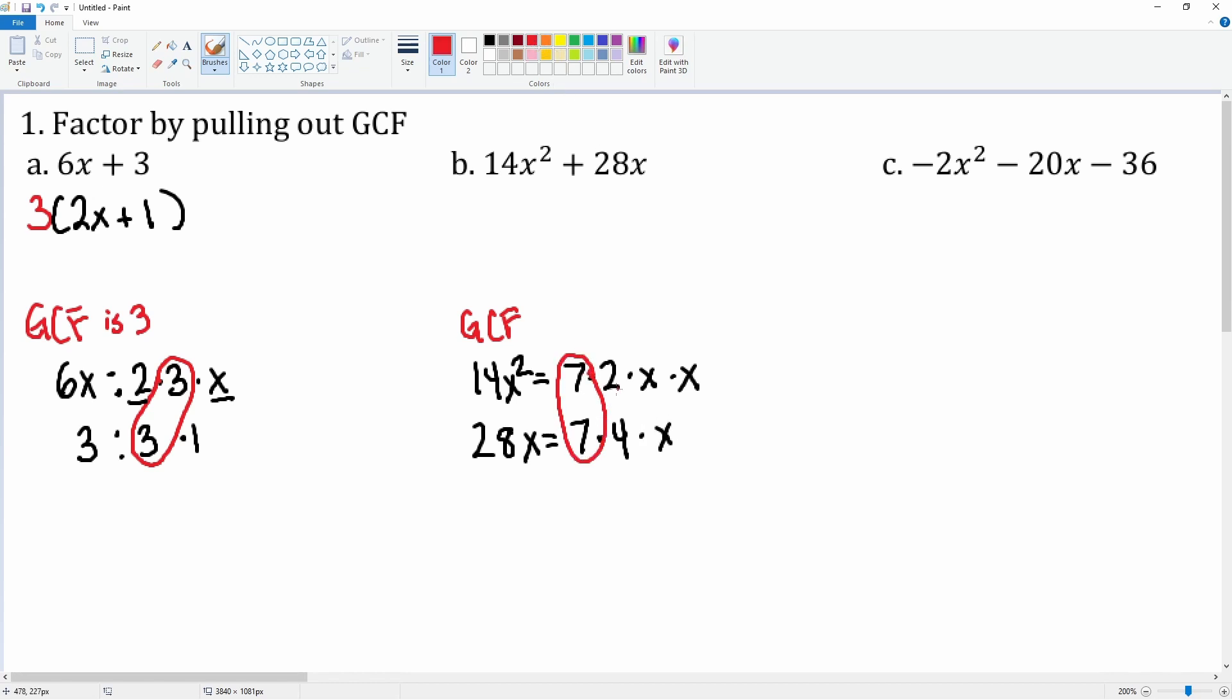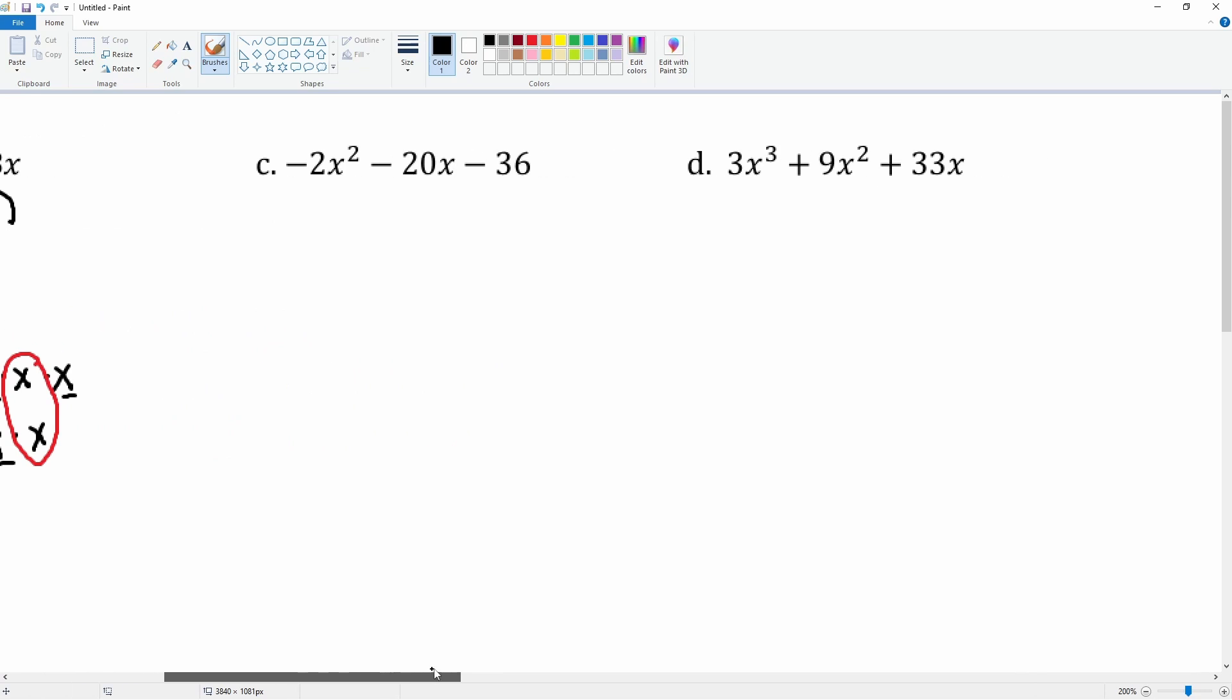What they have in common is 7 and x, so the GCF is 7x. We put 7x outside the parentheses. Inside, we have 2x left from the 14x², plus 4 left from the 28x.